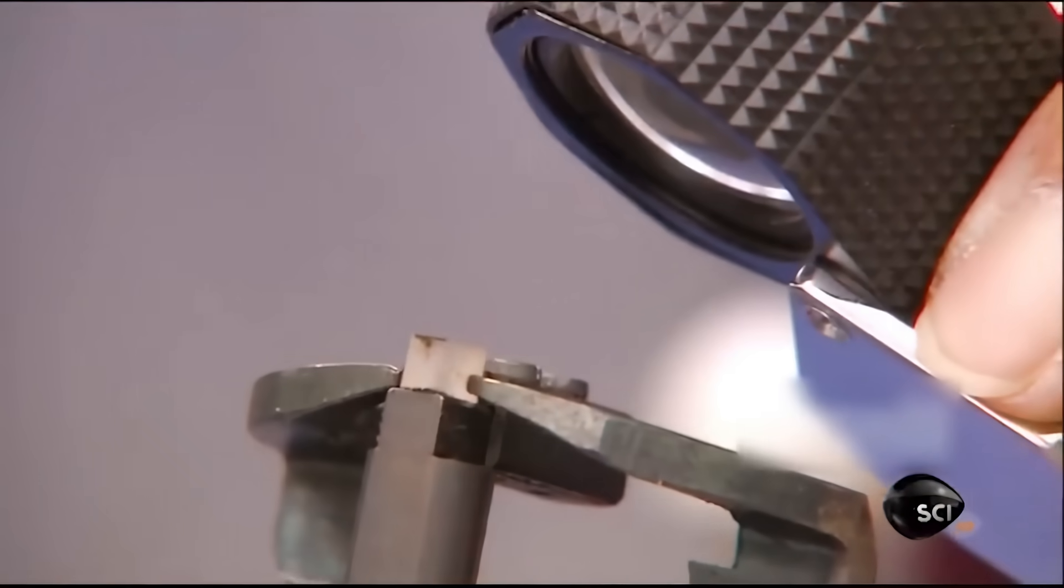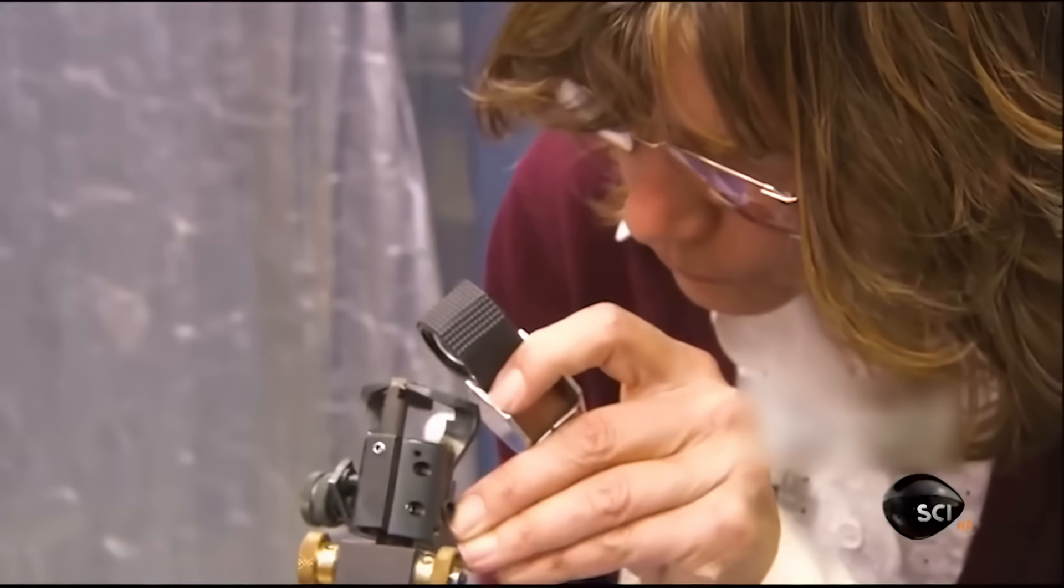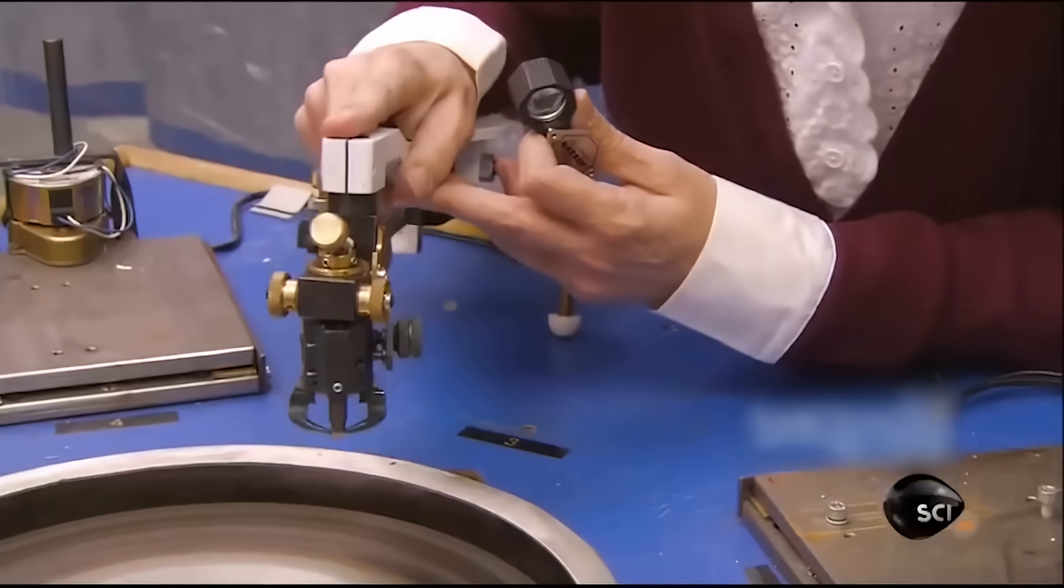A technician readies a gun on the hidden diamond, in case this act goes against the will of God. After deeming it safe, the diamond rock is set on a polishing wheel.